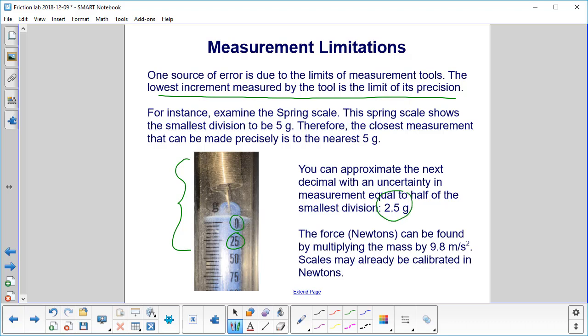You can then find the force in newtons by multiplying the mass by 9.8 meters per second squared. Some scales may already be calibrated in newtons. They've already done the multiplication for you.